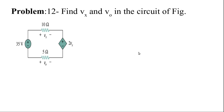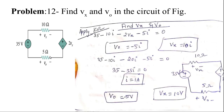Next problem: find Vx and V0 in the circuit. Taking current i flowing in the circuit: 35 minus 10i minus 2Vx minus 5i equals zero. Write Vx equals 10i and V0 equals minus 5i. Substitute Vx equals 10i into the KVL equation, find i, then find V0. The result is Vx equals 10 volts and V0 equals 5 volts.